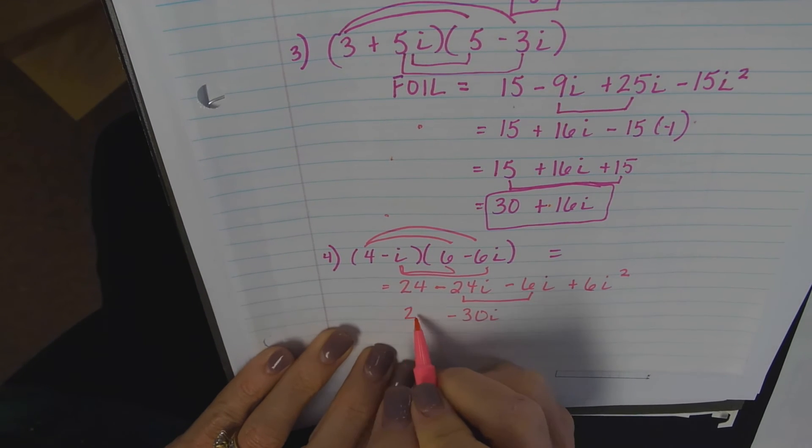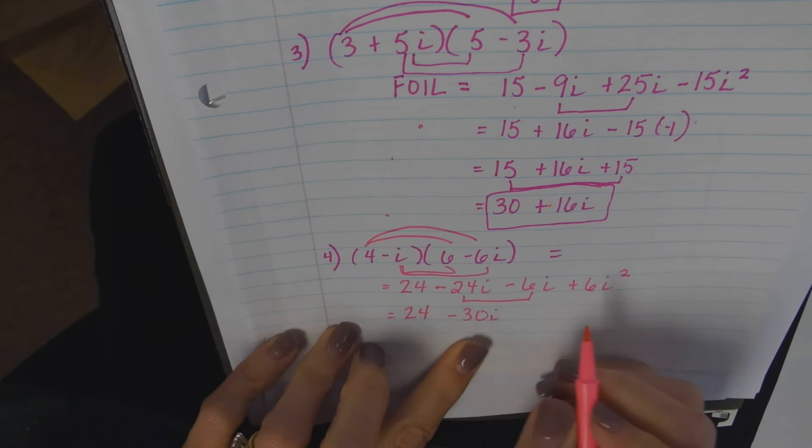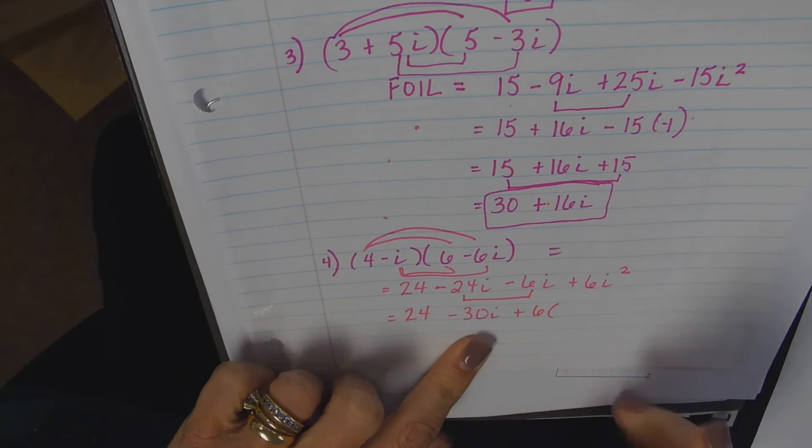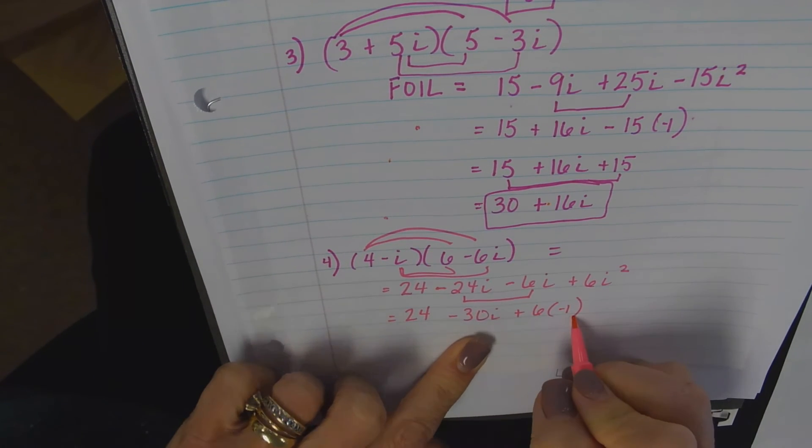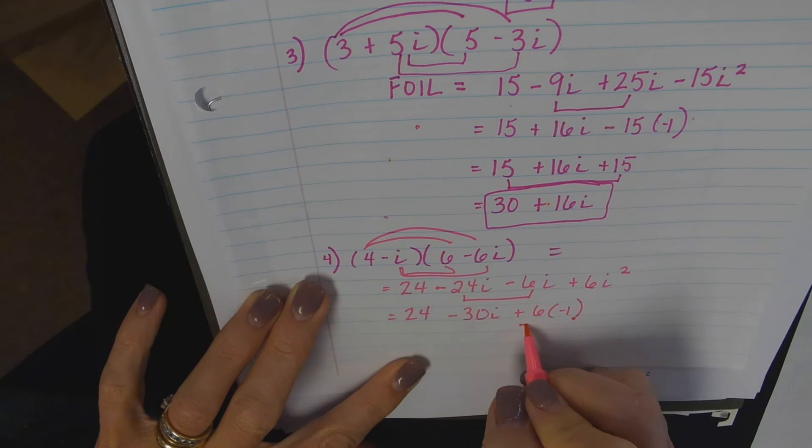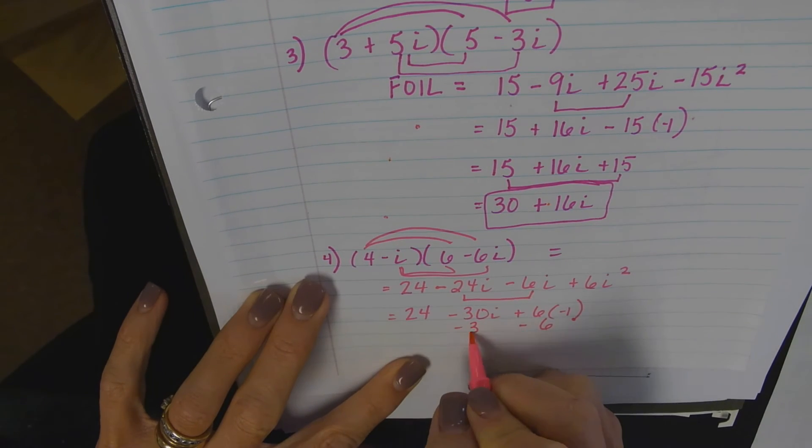We're just simplifying the two middle terms. I'm going to bring this down: 24 plus 6. What is i squared? Negative one. Right, and it ends up being negative 6. So let me just rewrite everything down.